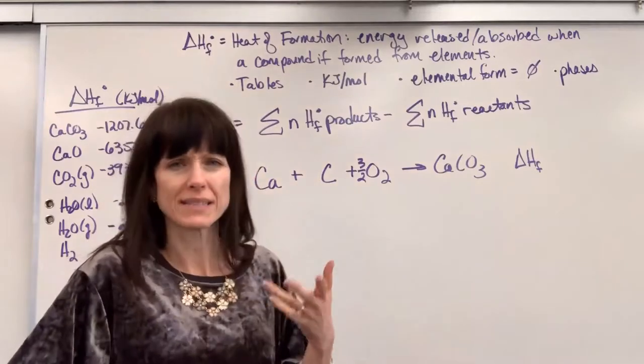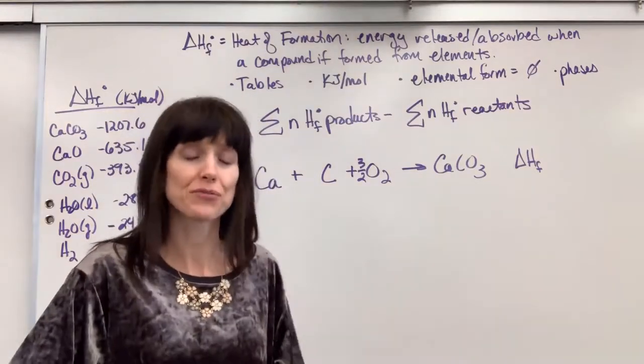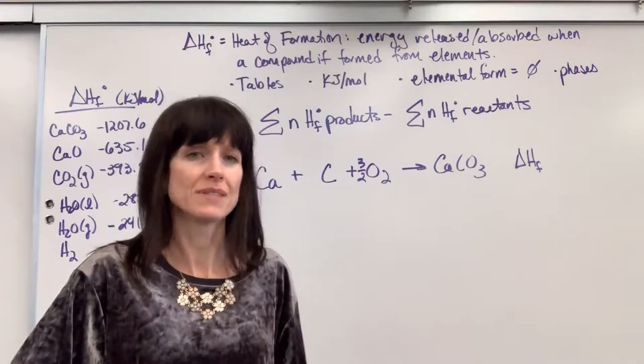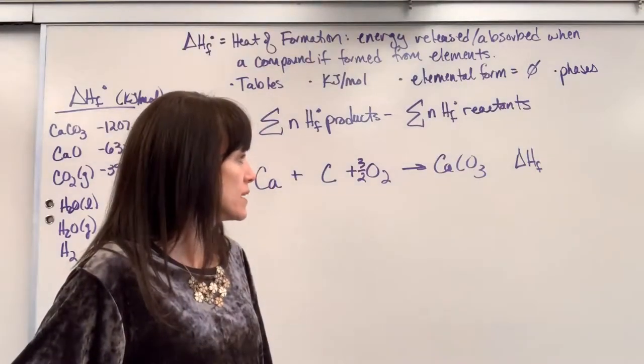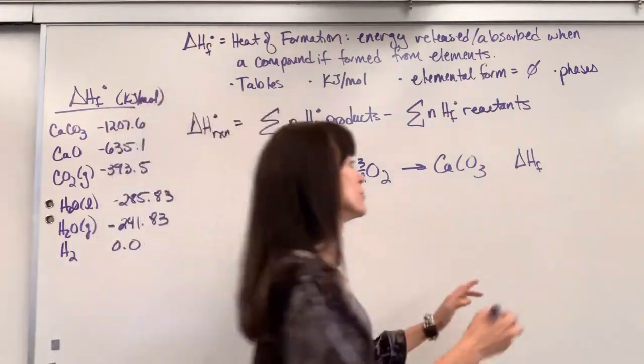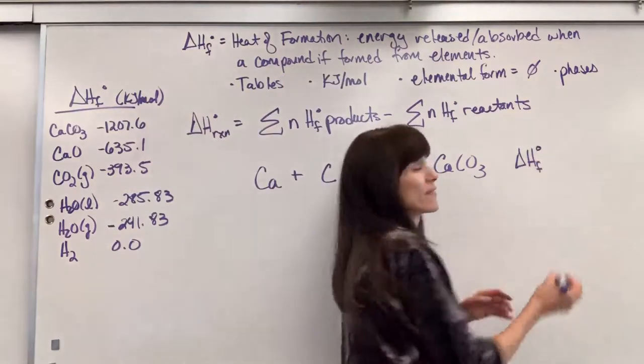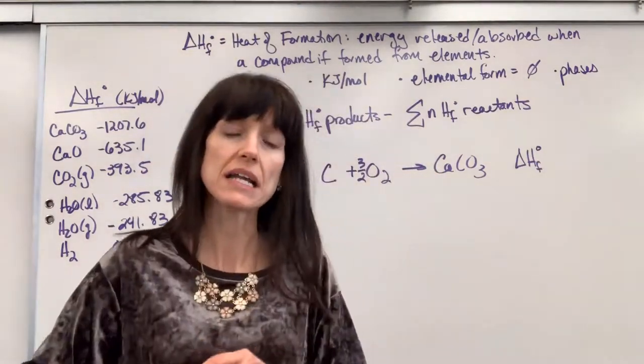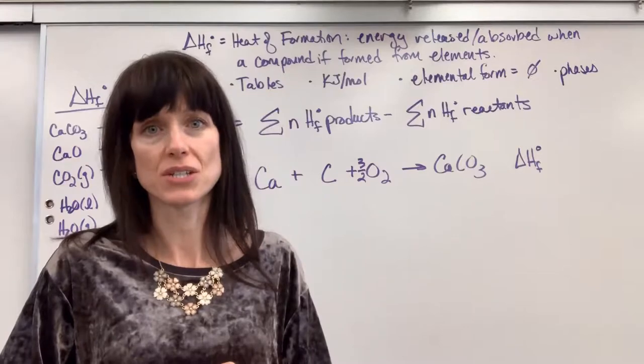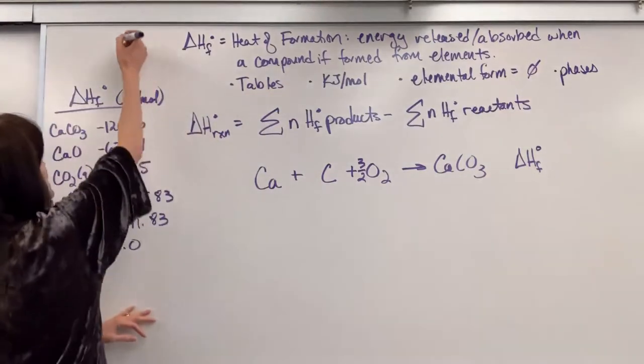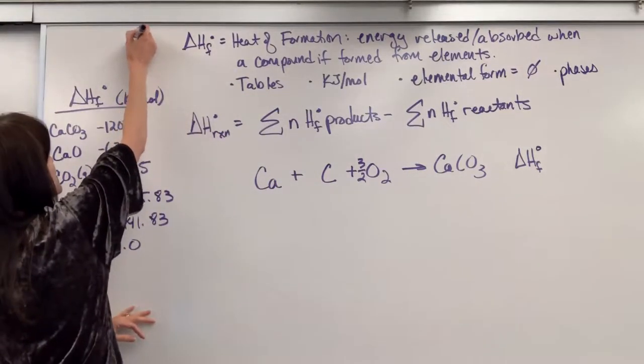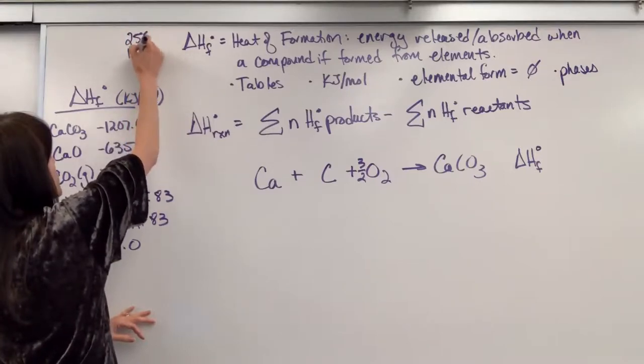Now be careful with this. Students will go, oh wait, is that heat of fusion? No, this is heat of formation. And you'll just have to read it contextually to see if it's heat of fusion or heat of formation. Usually on heat of formation we also have that knot, that little circle sign. And that means that we're at standard conditions. Remember, for thermodynamic standard conditions are going to be 25 degrees C and 1 atm.